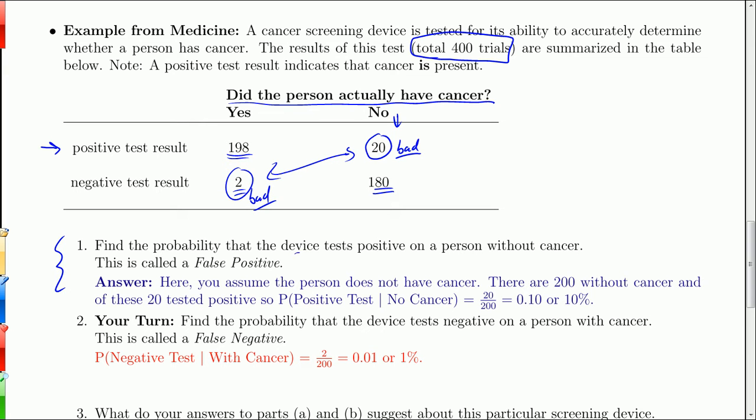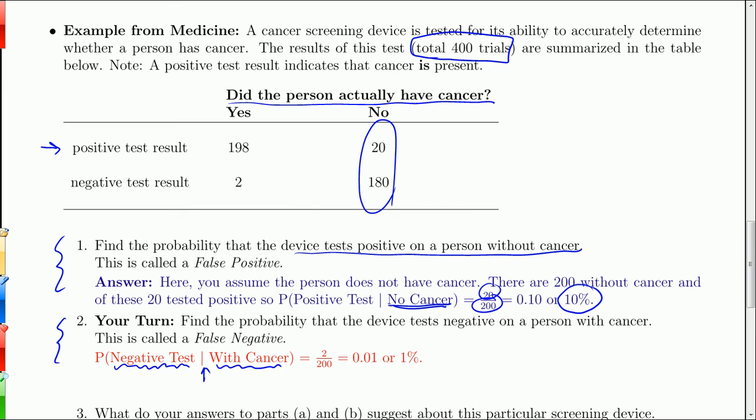Let's look at some conditional probabilities. Find the probability that the device tests positive on a person without cancer. I'm assuming that the person has no cancer, so I'm not dealing with all 400 anymore, I'm dealing with just these 200. 20 tested positive out of the 200 that had no cancer, 0.10 or 10%. On your turn, what's the probability that I get a negative test on a person with cancer? There's only 200 under the category of did have cancer, and 2 came back negative. So 2 out of 200, or 1%.